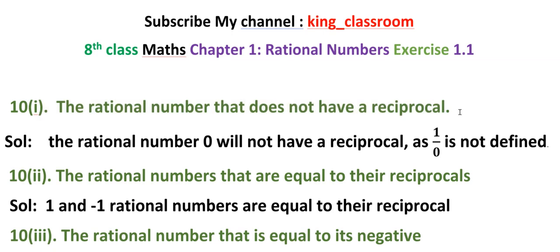The rational number that does not have a reciprocal is, solution: the rational number 0 will not have a reciprocal. Why? 1 by 0 is not defined. So 0 does not have a reciprocal.